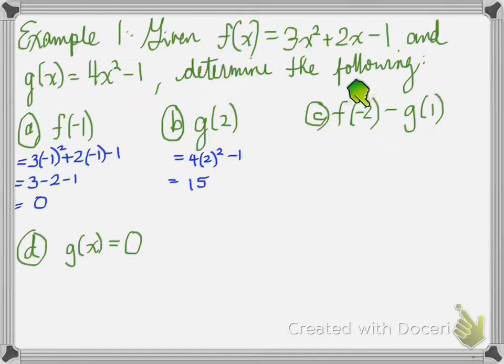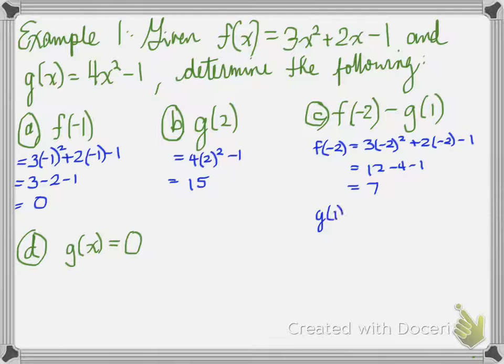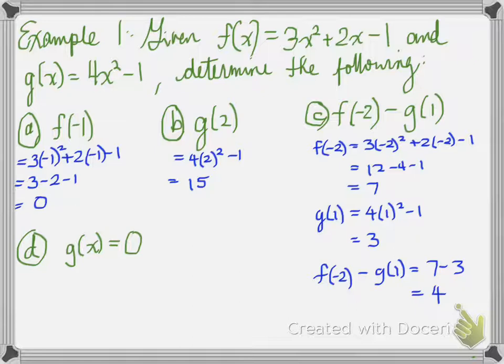Next one. f at negative 2 minus g at 1. Negative 2 in for the x's. 1 in for the x for the g equation. Negative 2 for the x's in the f equation. So what we should probably do here is do these separately. First do f at negative 2, plug it in, and sure enough, when we plug it in, we get a value of 7. Then we do g at 1, and we do that separately. And then finally, we put the 2 together, and we get the answer 4. So 7 take away 3 is 4. So this is important for you to understand how to solve.